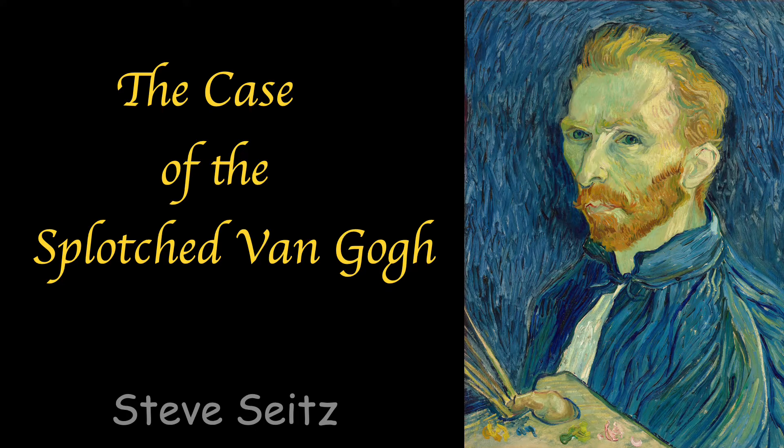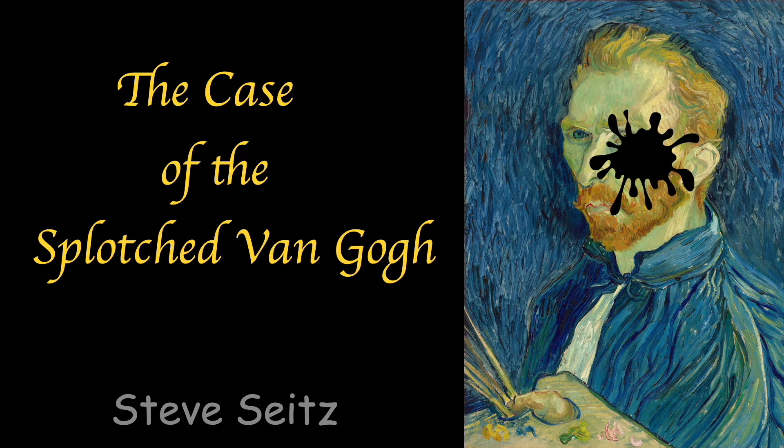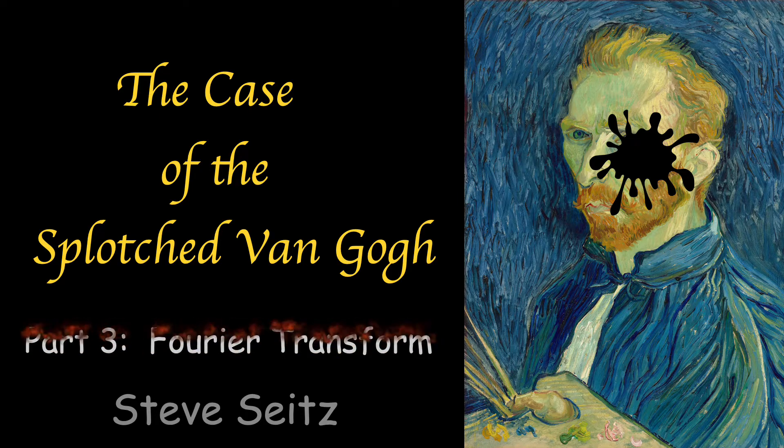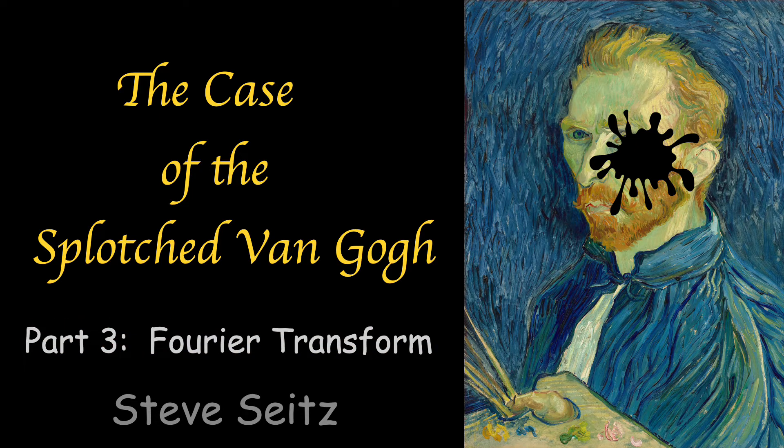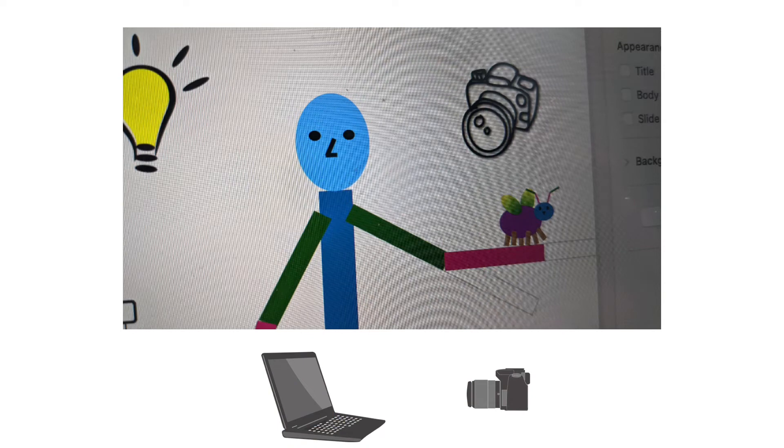Hello, and welcome back to the Case of the Splotch Van Gogh. In this video, we'll use the Fourier transform to help us solve this mystery. Last time we talked about weird problems that can happen when you shrink an image and how this relates to moiré patterns and camera sensors. In this video, we'll learn why these problems occur.